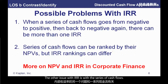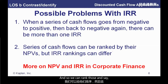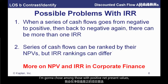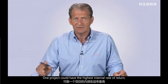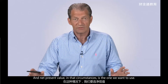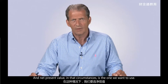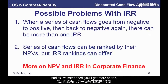The other issue with IRR: with a series of cash flows we could rank them by net present value — remember, NPV is a measure of the expected increase in wealth from doing a project. If I have to choose among three projects, I choose among those with positive net present values and pick the one with the greater NPV. We can also rank projects based on IRR, but the rankings could be different. One project could have the highest internal rate of return while a different project has the highest net present value. Net present value in that circumstance is the one we want to use. From a theoretical basis, net present value is always the best choice, and you'll get more on this in corporate finance.